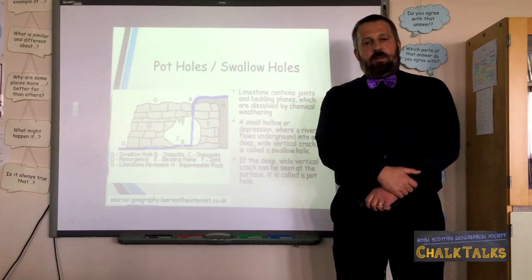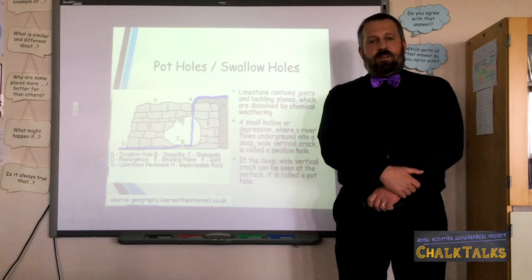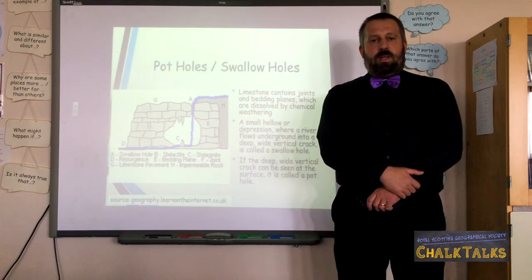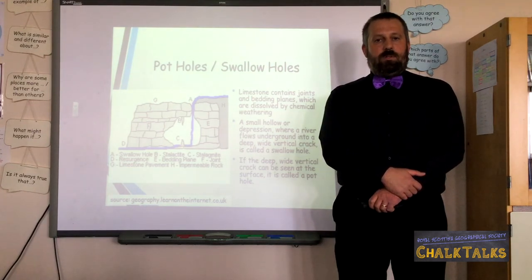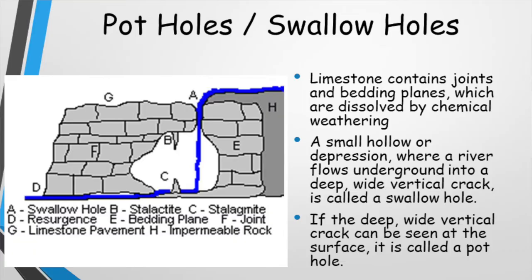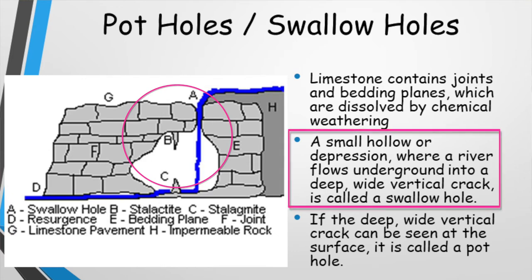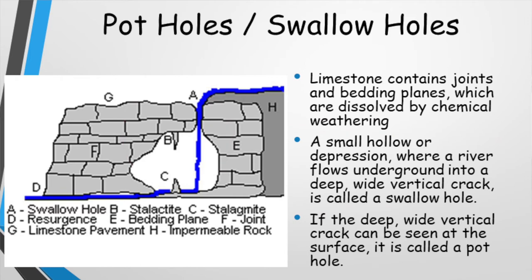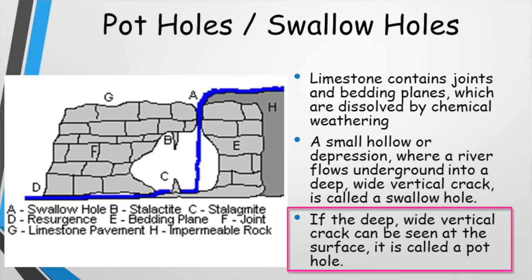Sometimes the joints and bedding planes dissolve sufficiently wide that streams flowing over the surface of limestone can disappear and flow underground. The point where the stream disappears can sometimes be identified as a small hollow or depression on the surface, below which it expands into a much wider, deeper crack in the Earth's surface. These small hollows or depressions are referred to as swallow holes. If, however, the deep wide vertical crack extends all the way up to the surface, then they are referred to as potholes.